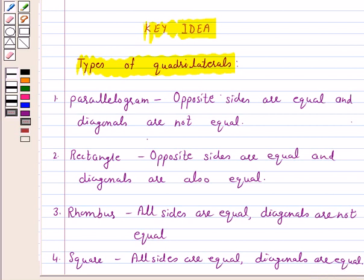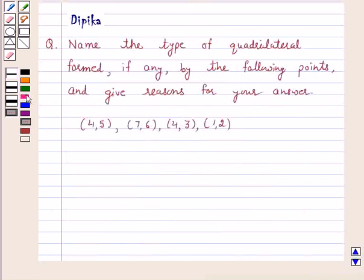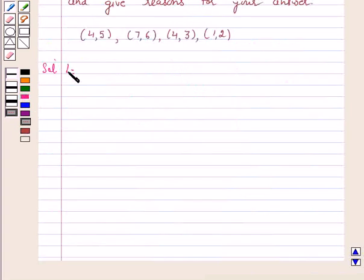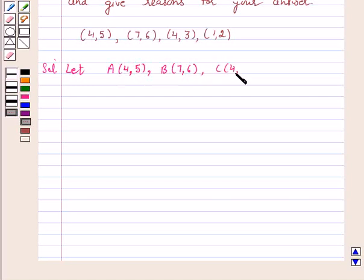So let's start the solution. Let A = (4, 5), B = (7, 6), C = (4, 3), and D = (1, 2).